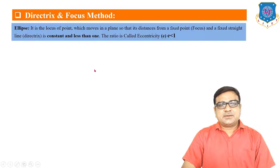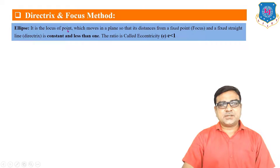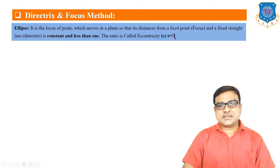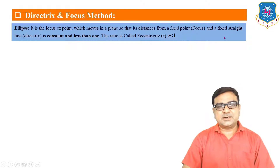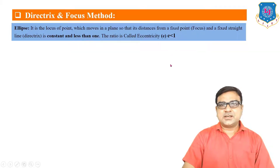What is the directrix and focus method? This is the definition for an ellipse. It is the locus of a point which moves in a plane so that its distance from a fixed point, called the focus, and the fixed straight line, the directrix, is constant and less than one. This ratio is called eccentricity, denoted by small e.